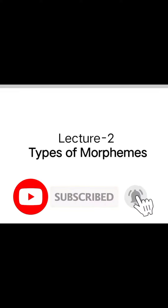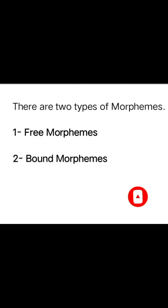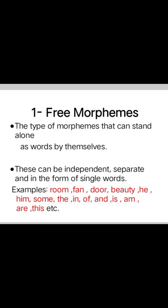Bismillahirrahmanirrahim. Assalamu alaikum. Today in this short video I am going to discuss with you types of morphemes. There are two types of morphemes: free morphemes and bound morphemes. Free morphemes are the type of morphemes that can stand alone as words.